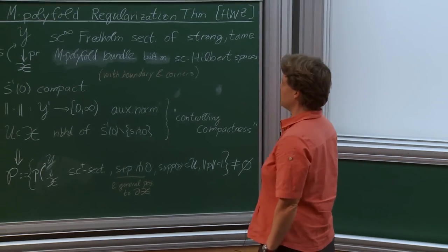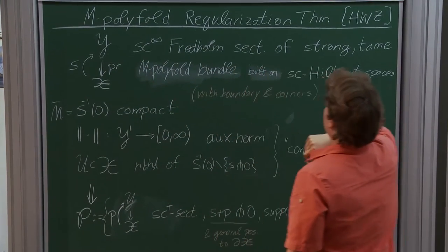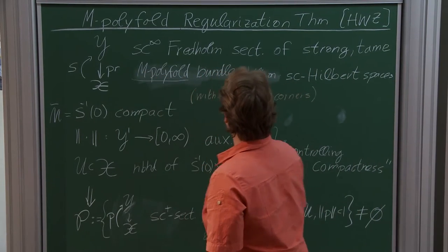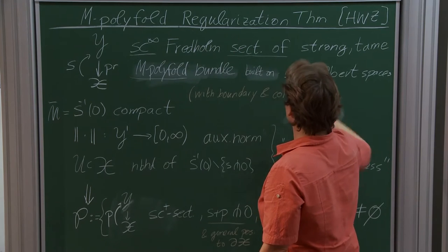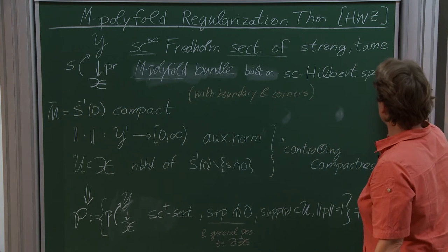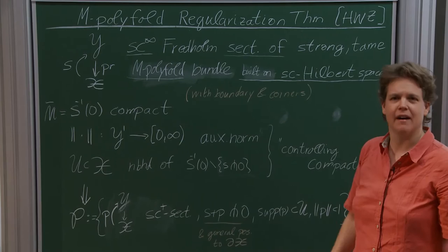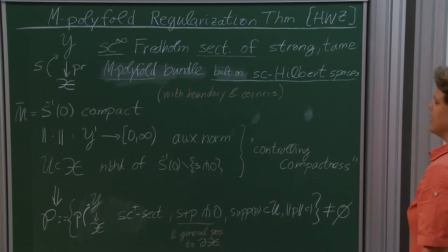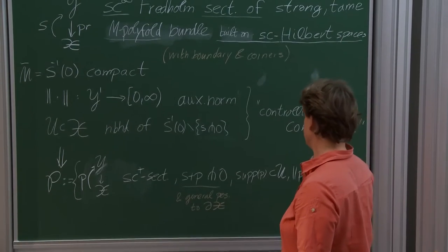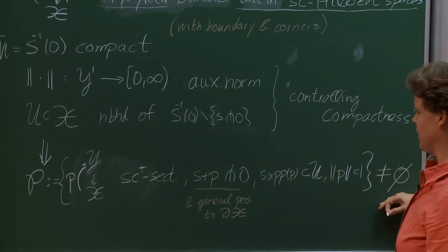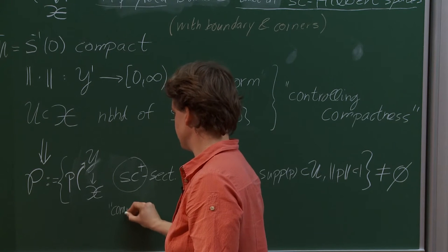Here's our theorem, and today the goal is to actually explain every single word. We want to regularize a moduli space, which we think of as being cut out as the compact zero set of some section. We know what an m-polyfold is, what scale-smooth is. I need to tell you what Fredholm is. The reason we want to model everything on scale Hilbert spaces is that we want cutoff functions. The key is that something is non-empty: a space of other sections that are SC-plus, which you should think of as compact perturbations.